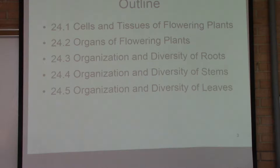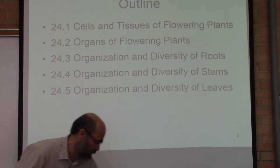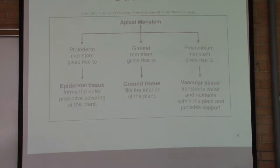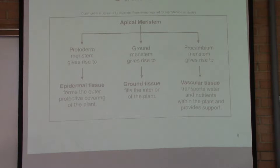Chapter 24 is on the structure and organization of flowering plants, and flowering plants are all angiosperms. This chapter is heavy on structure, sections, and knowing the different types of cells contained in different parts of the plant — including the difference between monocots and eudicots in terms of their vascular tissue structure. It's a little more difficult than what we've covered, but there's a lot of memorization.